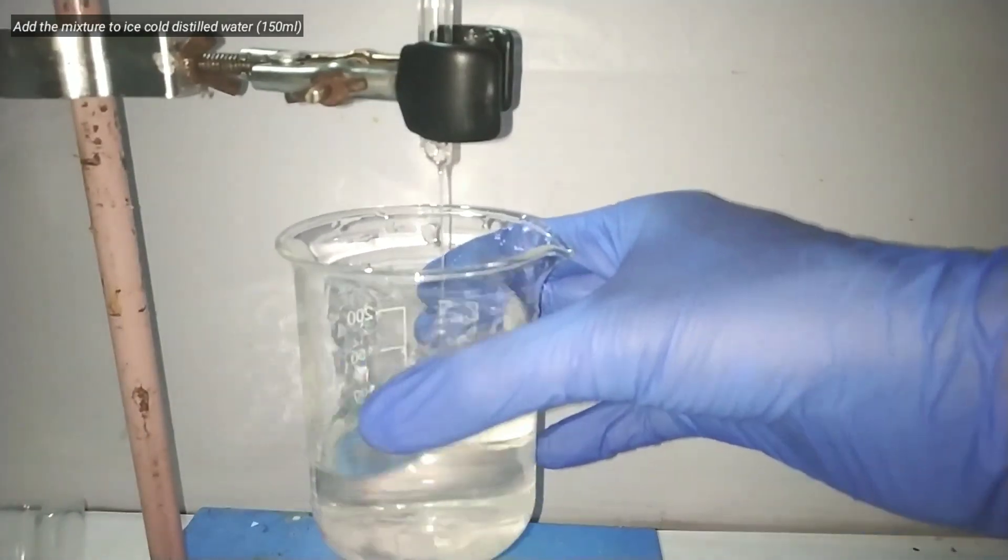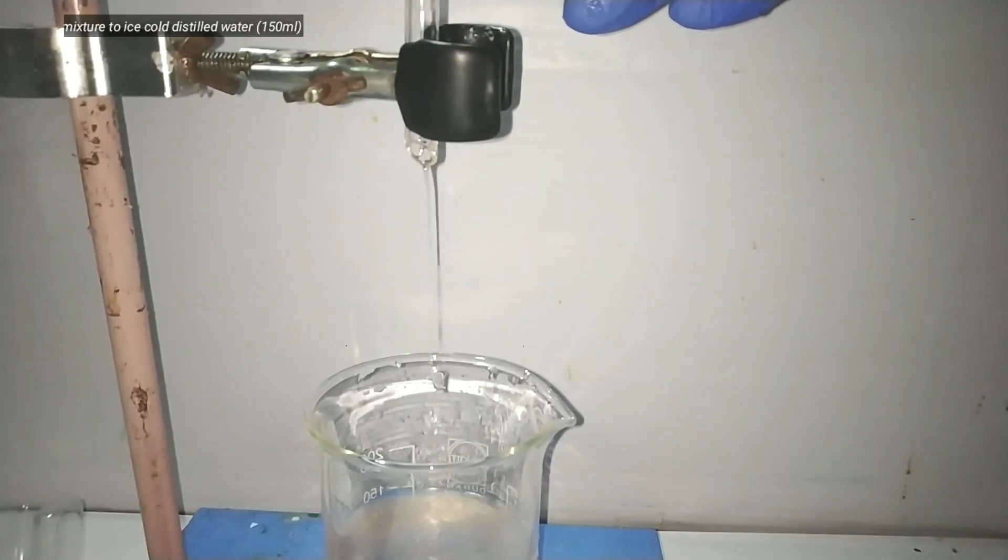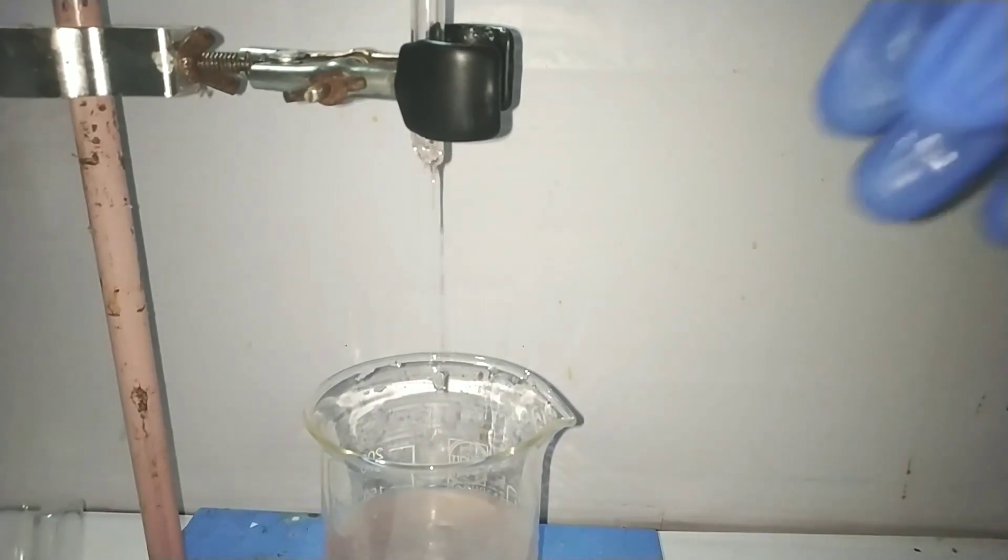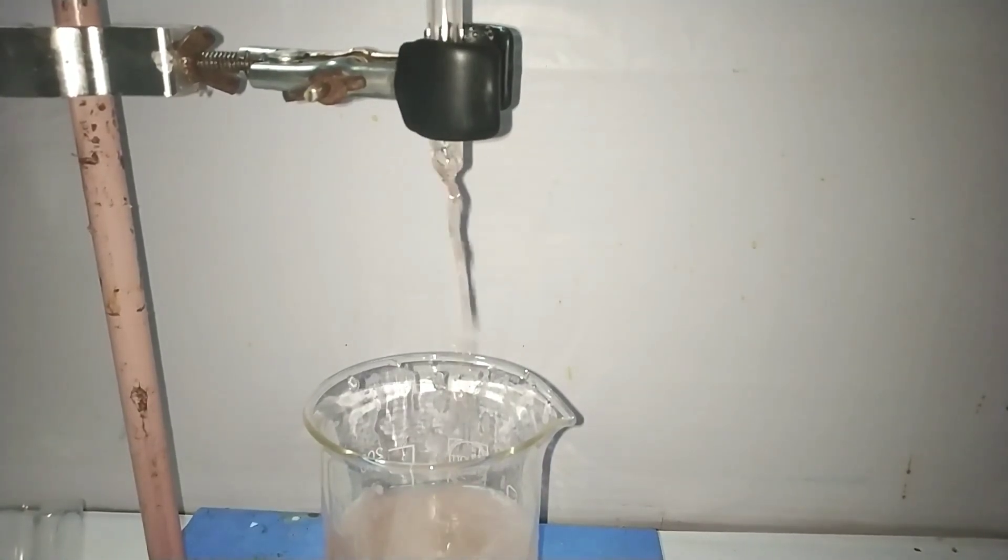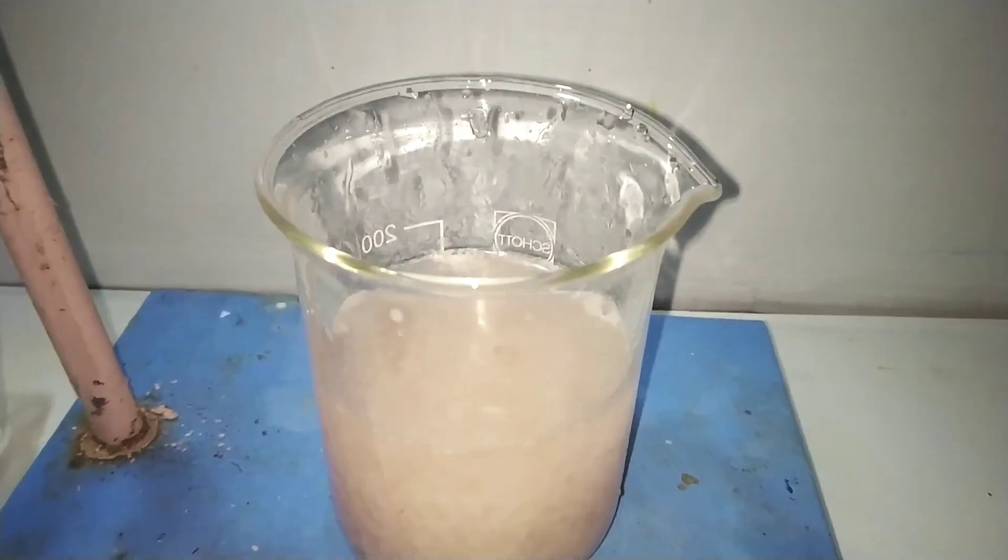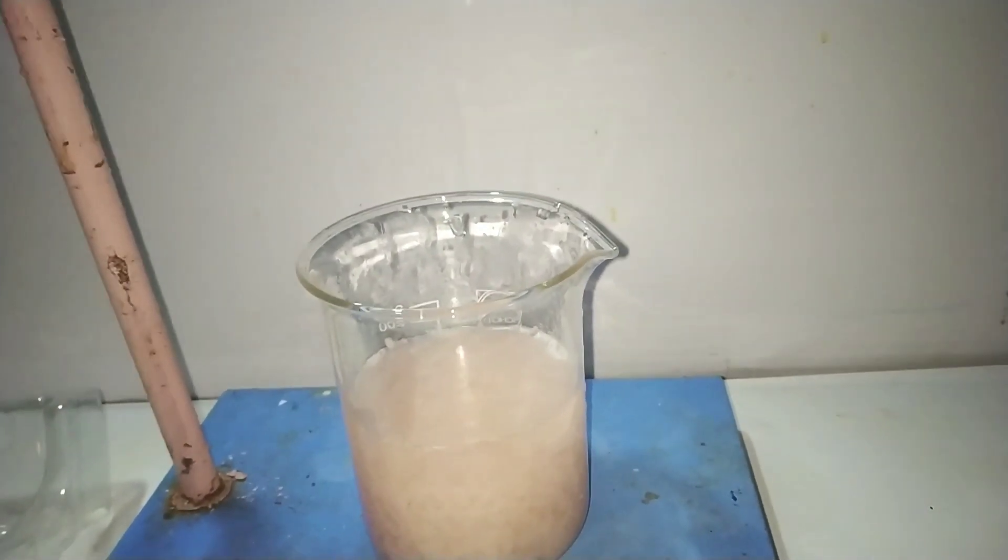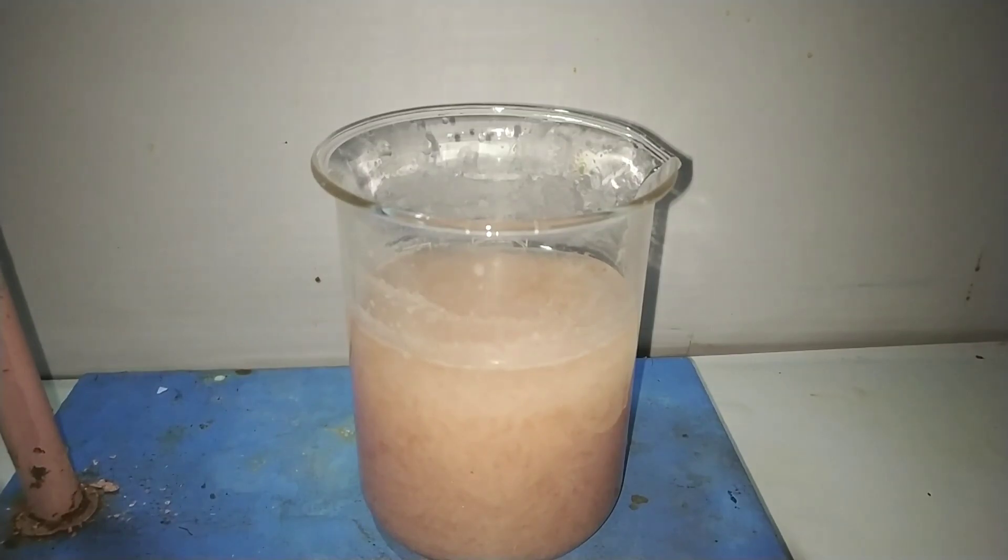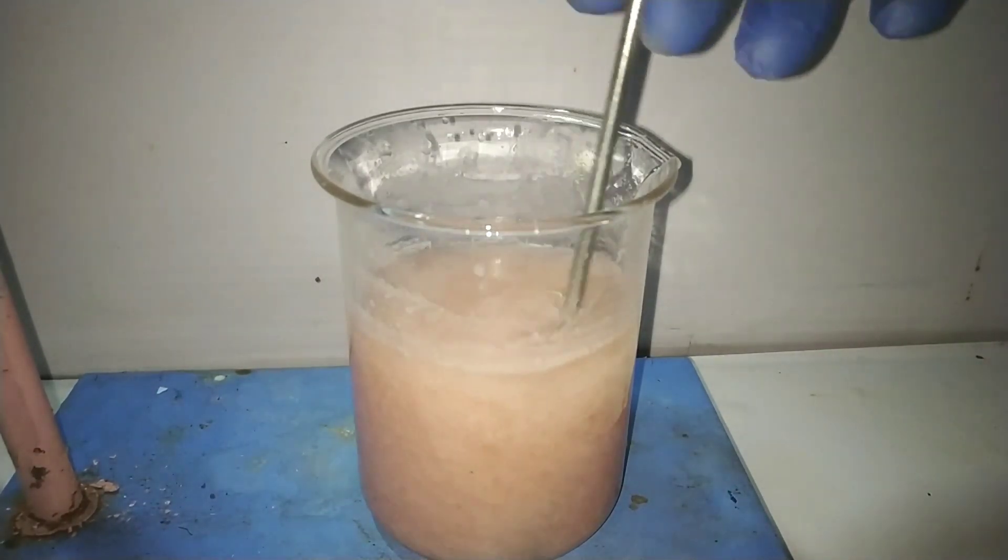So next we take about 150 ml of ice cold distilled water and add the contents of the flask into the water. I forgot why but I had taken the contents of the flask in my separatory funnel and then added it into the distilled water. On mixing them together a white precipitate separates out and this is the crude parabromoacetanilide.